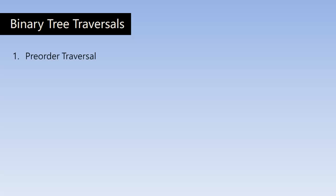Here are the different types of traversal. One is pre-order traversal, another one is in-order traversal, and the last one is post-order traversal. These traversals are based on the order that we process the root node and the left subtree and the right subtree.